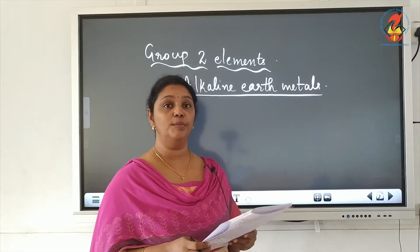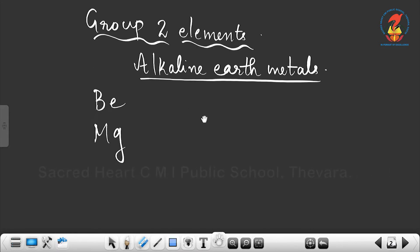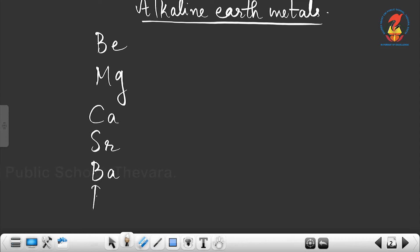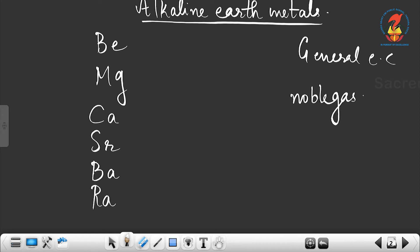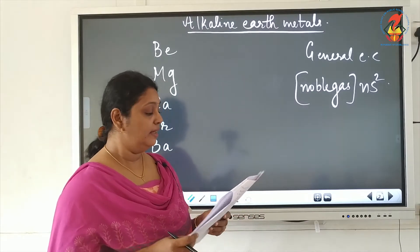The elements of group 2 are beryllium, magnesium, calcium, strontium, barium, and radium (Ra). The general electronic configuration of group 2 elements is [noble gas] ns², which means there are two valence electrons in the s orbital.